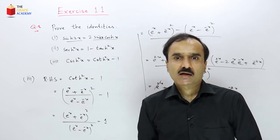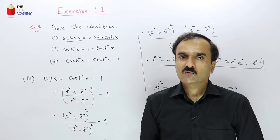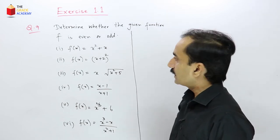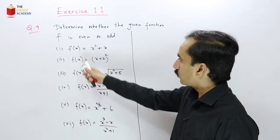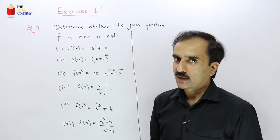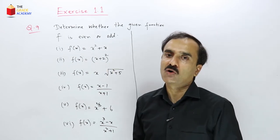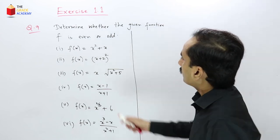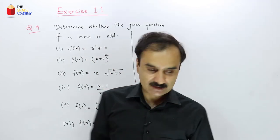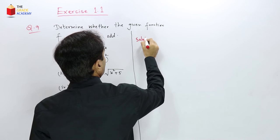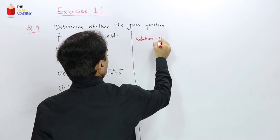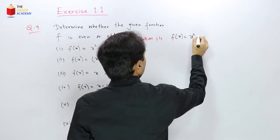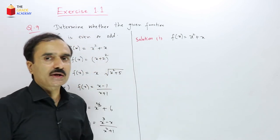Now we go to the last question of the exercise: identifying even and odd functions. We are given several functions and need to determine which are even, odd, or neither. Recall from the previous lecture: a function is even if f(−x) = f(x), and odd if f(−x) = −f(x).